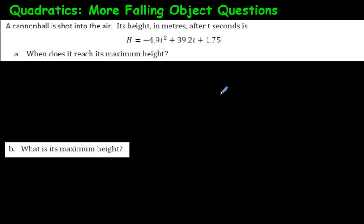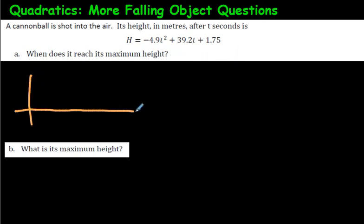This is a falling object question about a cannonball being shot into the air. It originally said 'a ball thrown into the air,' but the answer was way too high for any human arm, so it was changed to a cannonball. We're given an equation and need to find when it reaches its maximum height. When a ball is thrown into the air, time starts at zero seconds when it's launched, goes up, then comes down.